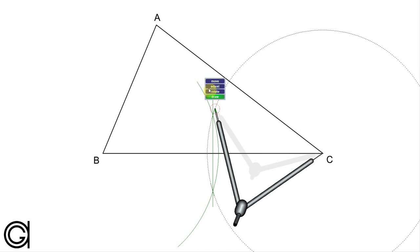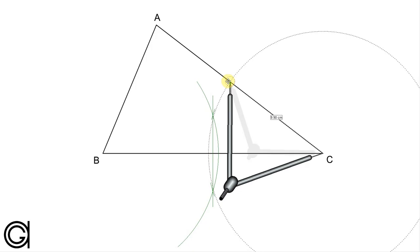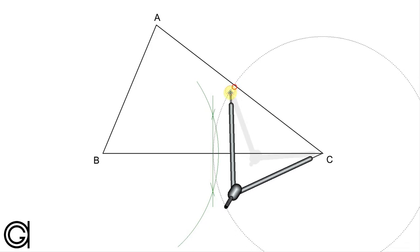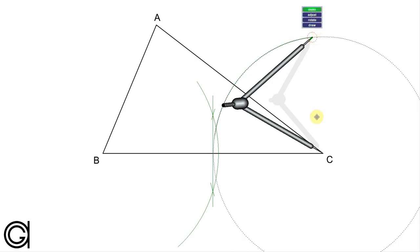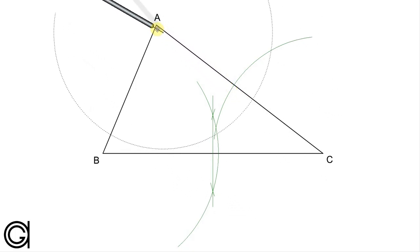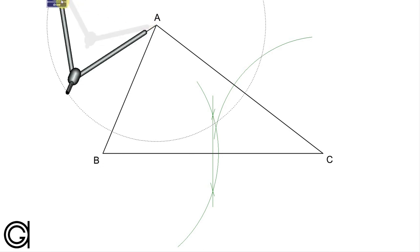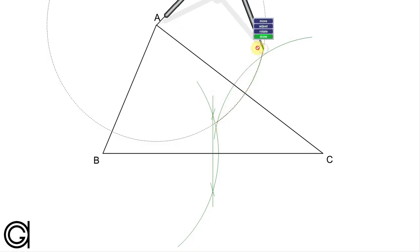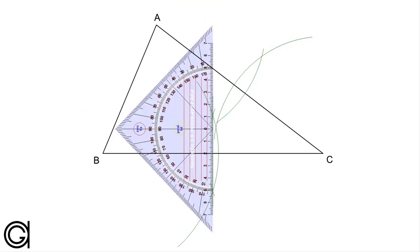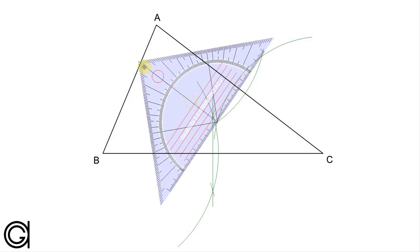So we have our first perpendicular bisector and now we are going to repeat this process with the side AC. Setting our compass slightly longer than half the length of the side AC, we are going to scribe an arc on both sides of the line. And again with the same radius, setting our compass on vertex A, we scribe another arc where it intersects our previously drawn arc at two points. And now we are going to draw the perpendicular bisector of side AC through the intersection points of the two arcs.